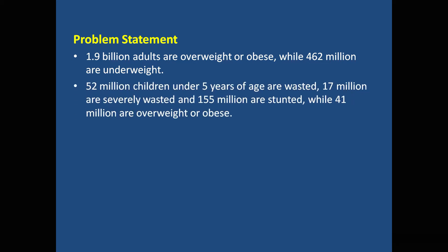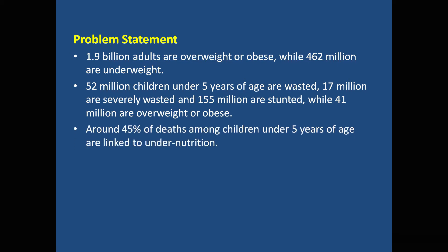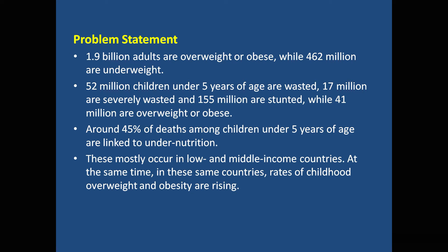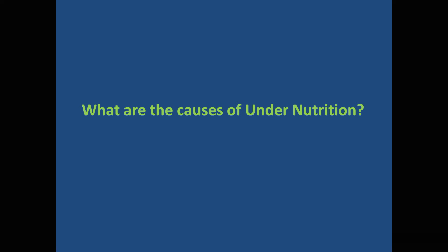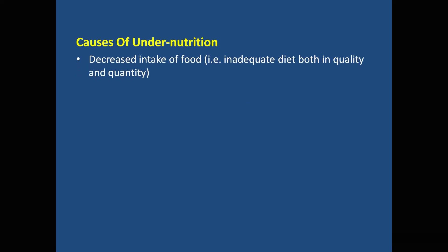Globally, 1.9 billion adults are overweight or obese, while 150 million are underweight. As far as children are concerned, 52 million children under 5 years of age are wasted, 17 million severely wasted, and more than 150 million are stunted. At the same time, 41 million are overweight or obese. Importantly, 45 percent of deaths among children under 5 years of age can be attributed to under-nutrition, mostly occurring in low and middle income countries.